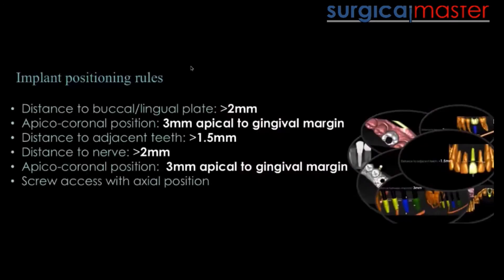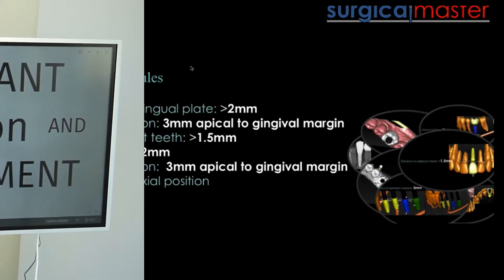Here's the summary — you may want to take a snapshot. We need to be about two millimeters to the buccal plate, three millimeters apical to the gingival margin, 1.5 millimeters to the adjacent teeth, and you have a leeway to the nerve of about two millimeters. I hope this is all clear.